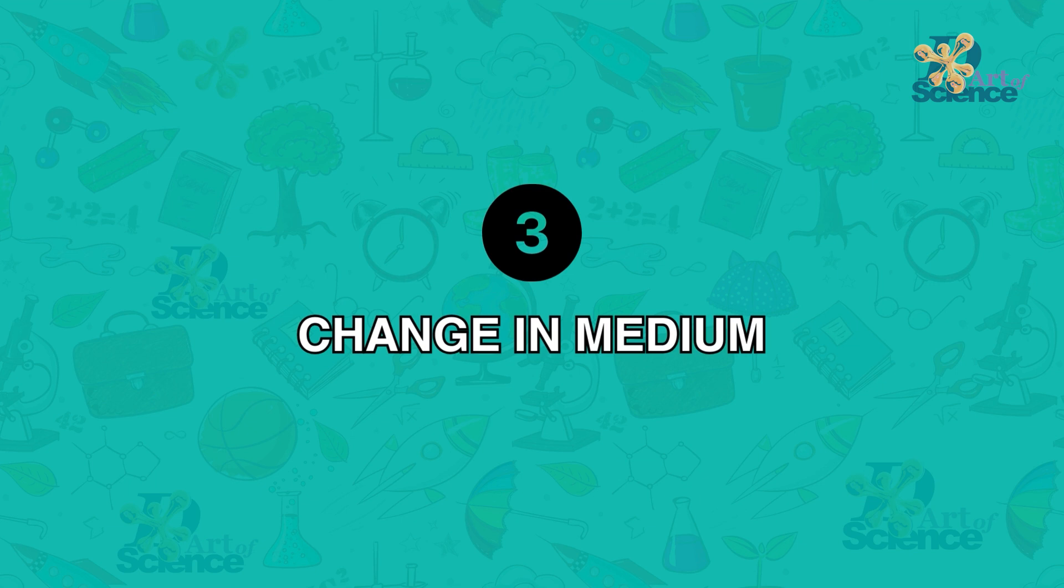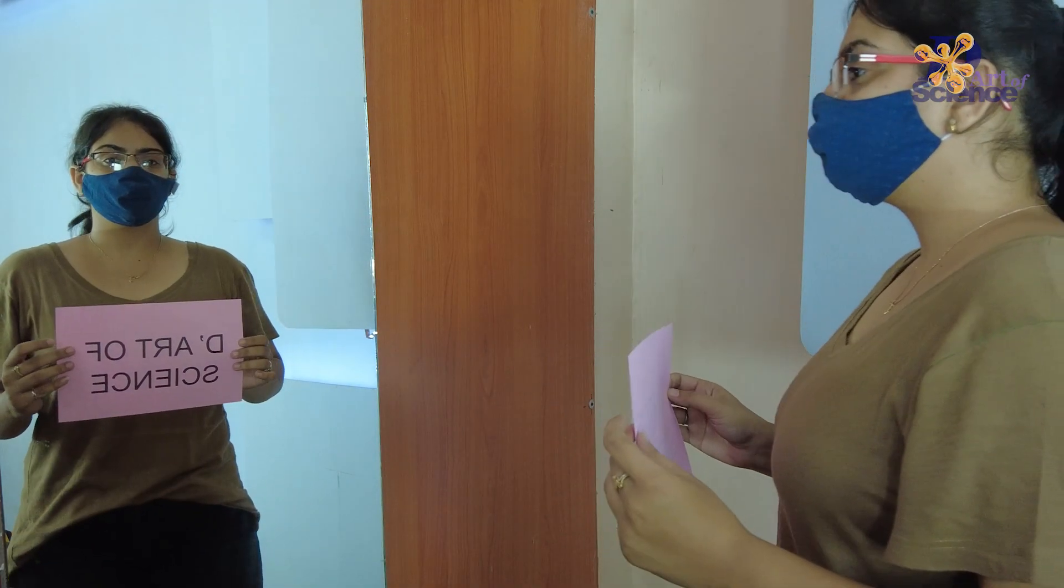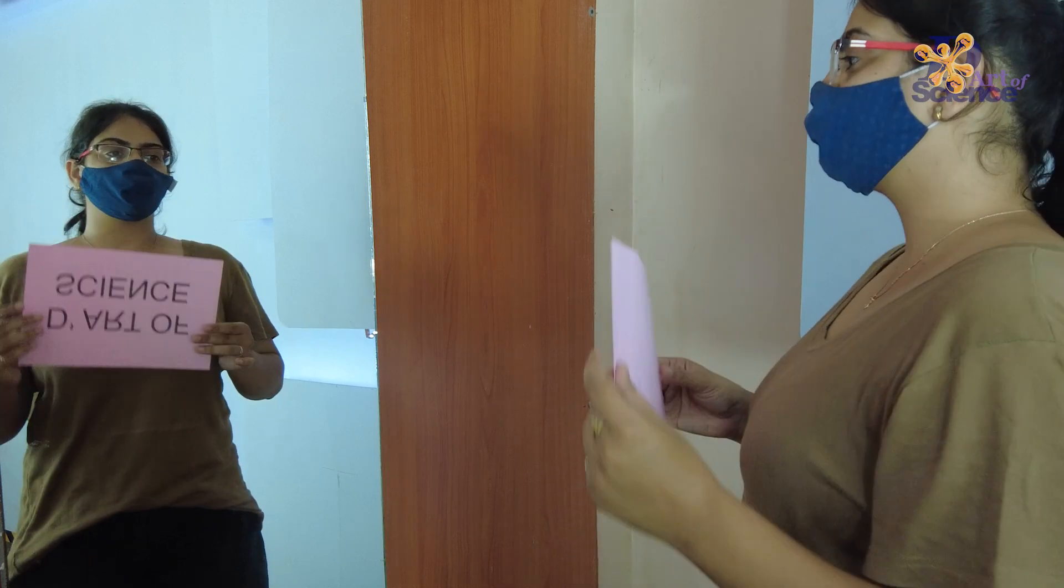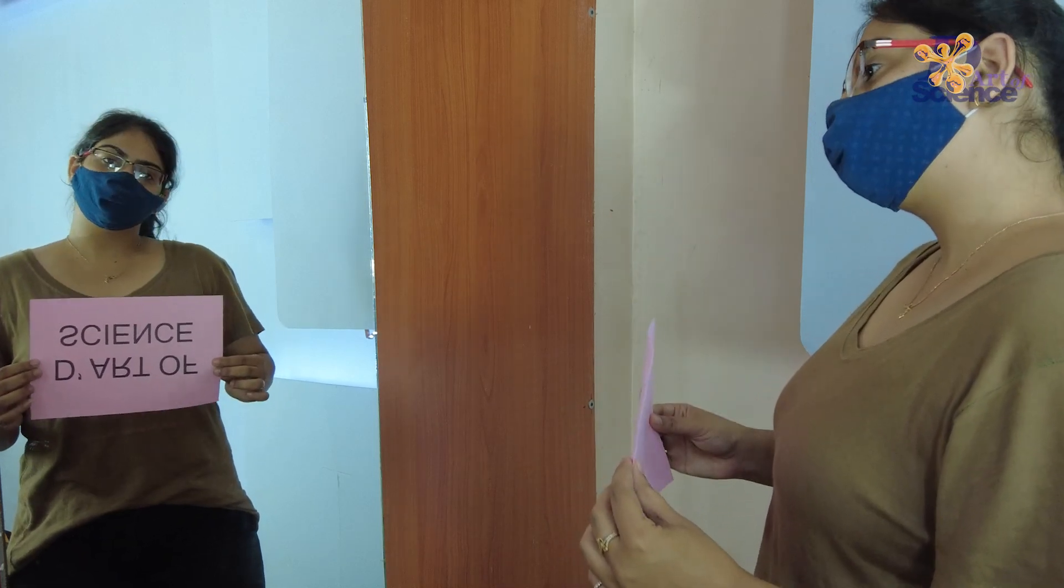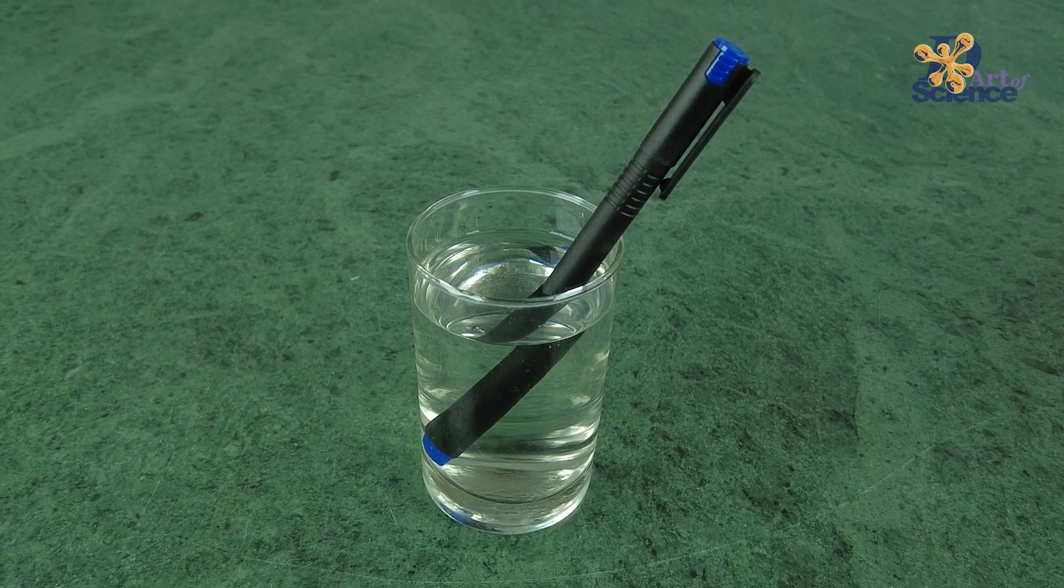Now moving on to difference number three, which is medium change. In case of reflection, there is no change in medium. Light bounces and travels back into the same medium. In case of refraction, however, there is a change of medium like we saw earlier.